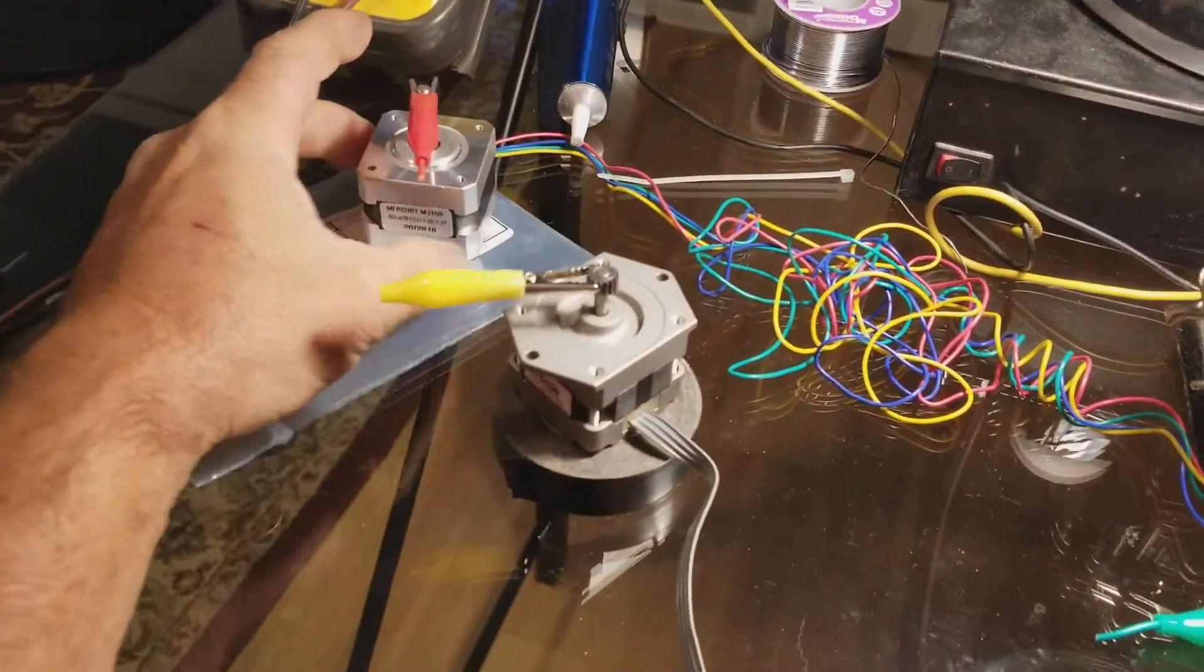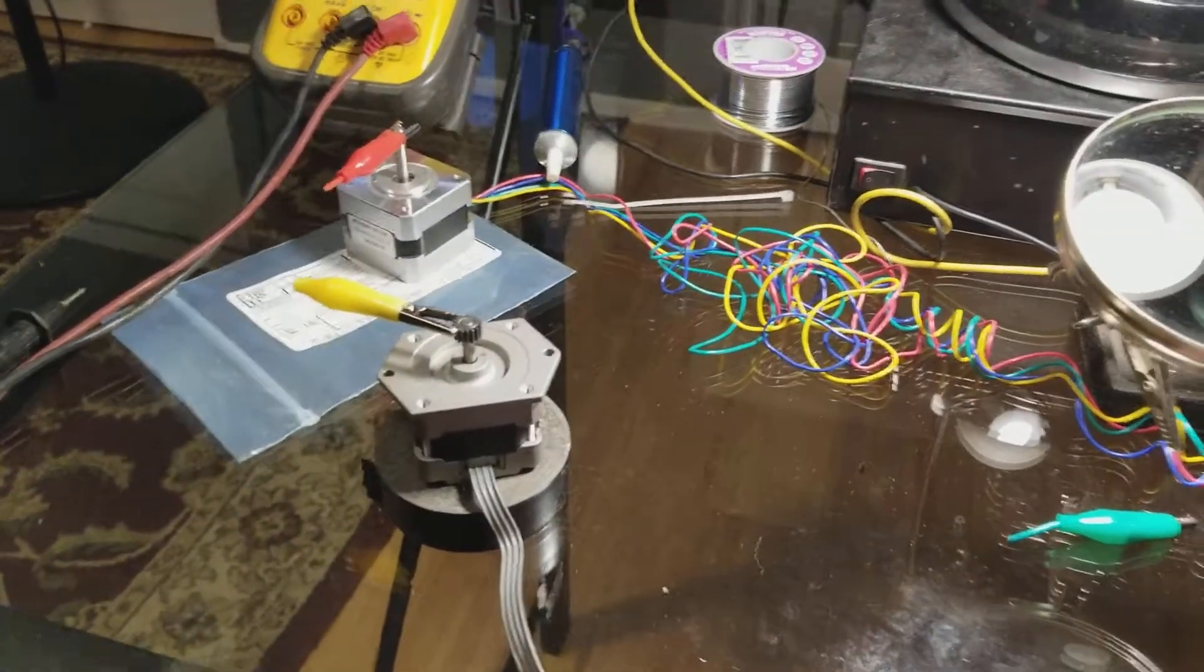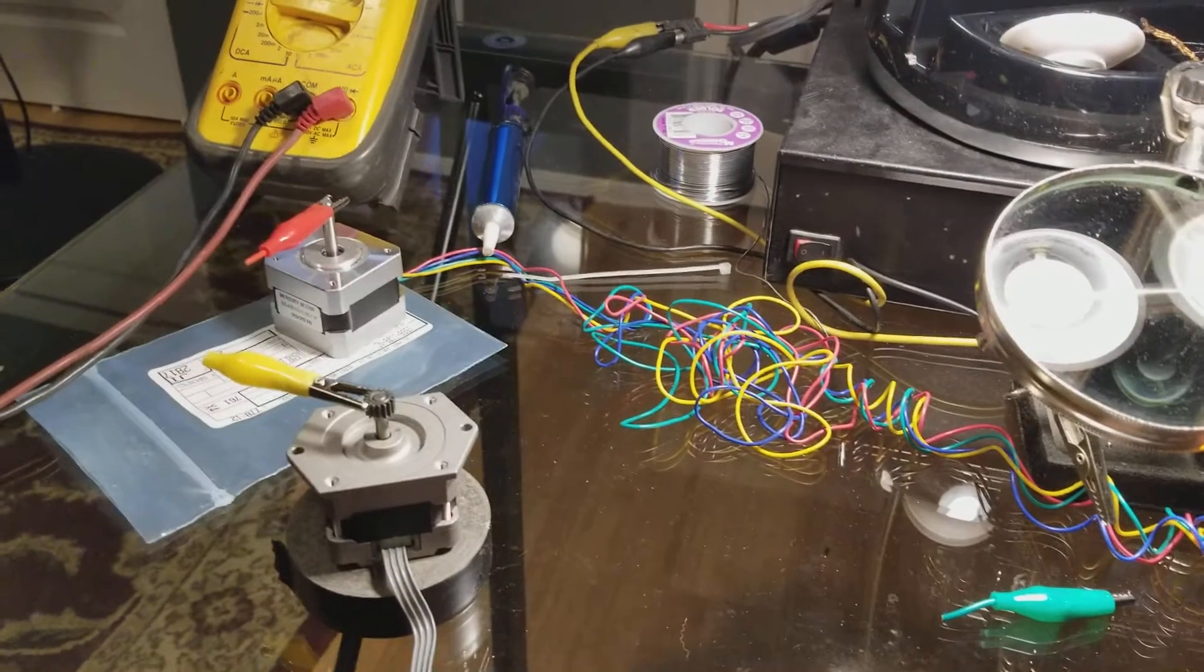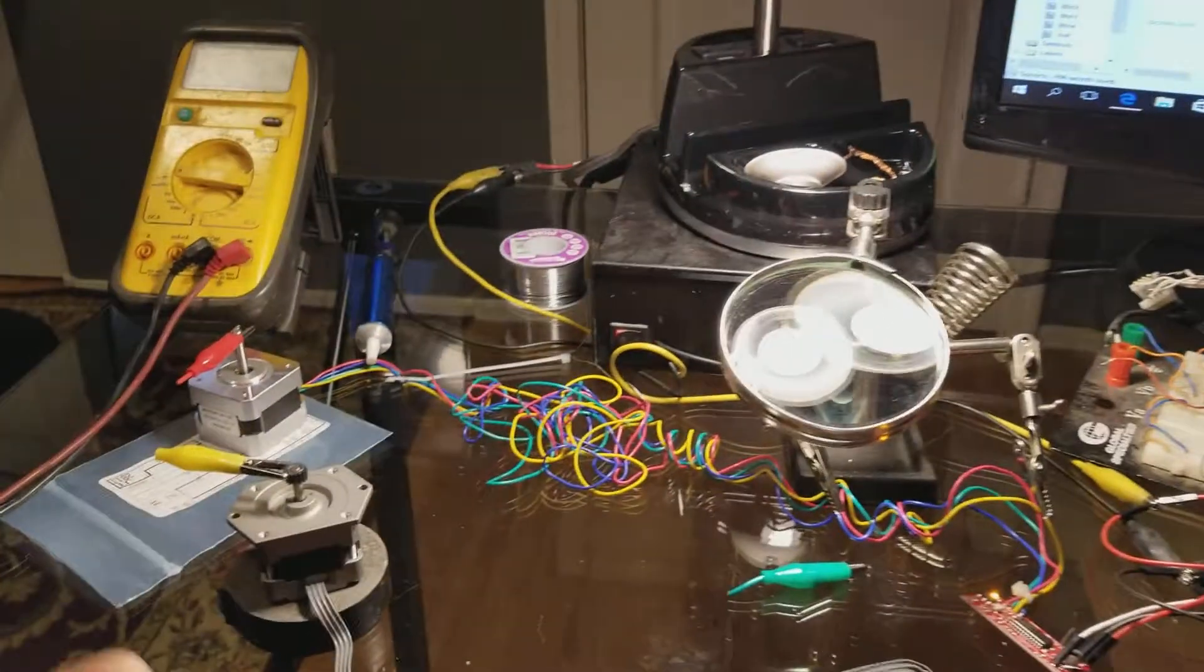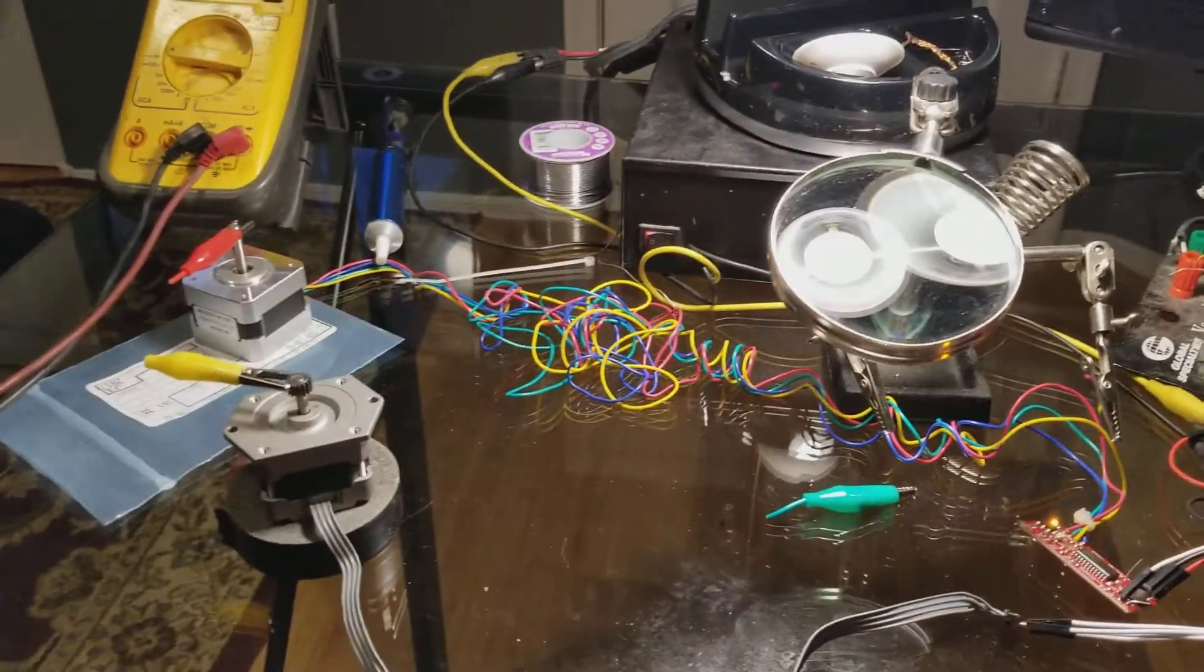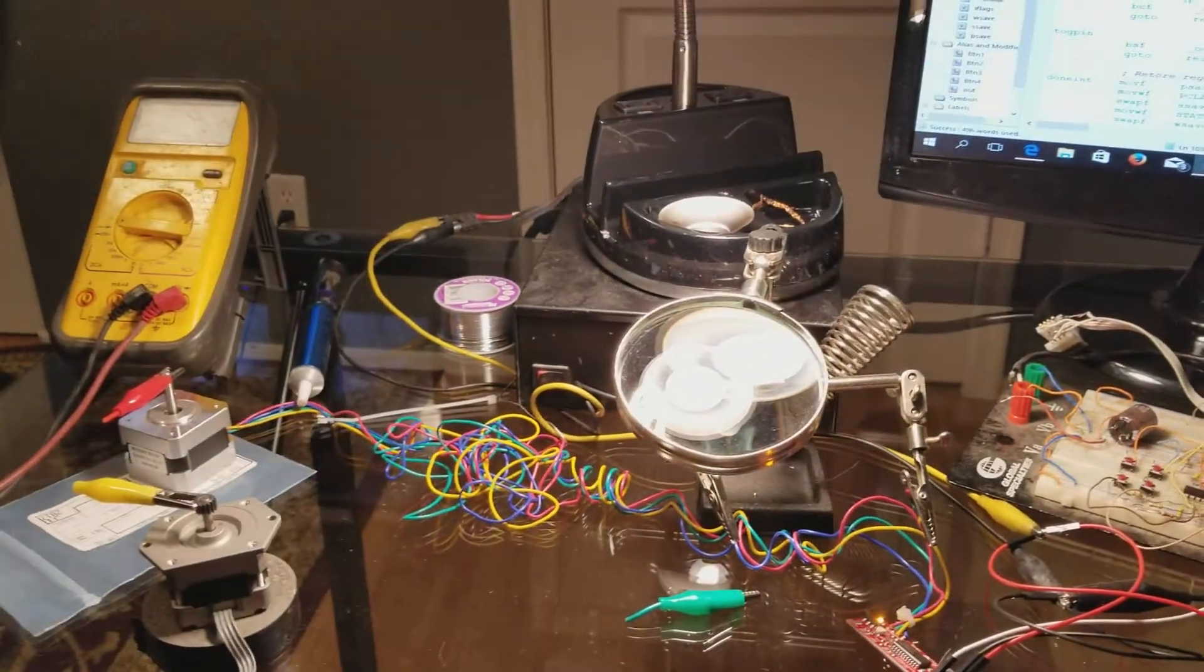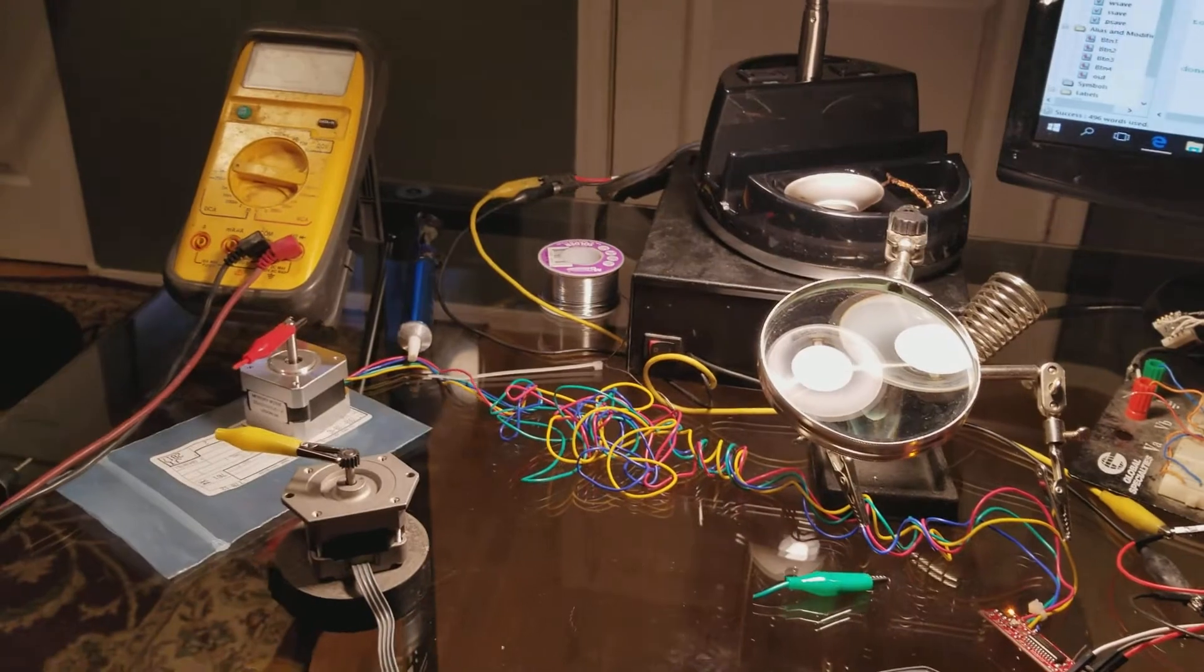So basically I have some stepper motors that I want to start using for some projects. One such project is I want to make a base that I can adjust the azimuth and the altitude of a telescope to basically use a joystick to aim it at the moon and the stars or whatever. Because when you move a telescope by hand it really sucks and you overshoot it. It's really hard and difficult to aim at objects that far away with that kind of optical zoom.